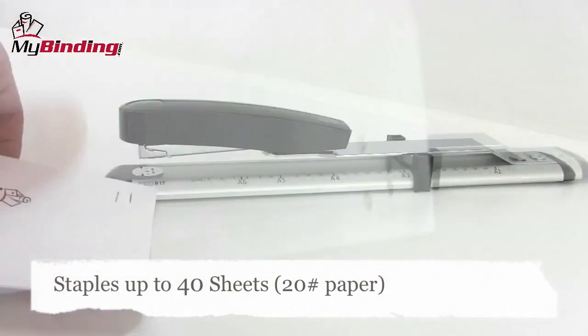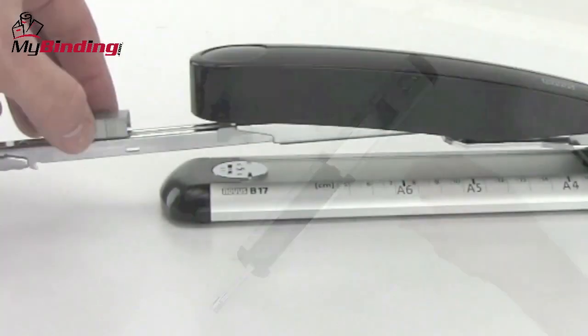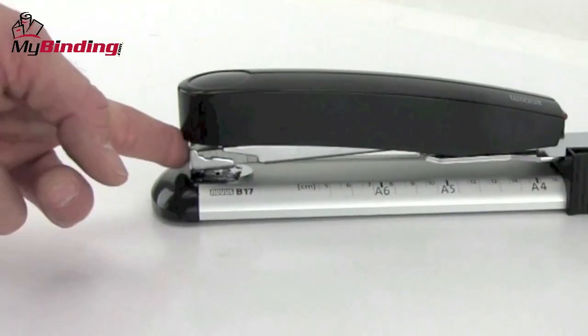The stapling capacity is an impressive 40 sheets of 20-pound paper. Reloading is simple: the red button on the back pops out the carriage, load the carriage, slide it back in, and you're ready to go.